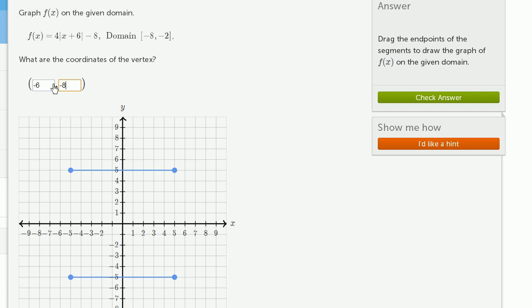So that's the vertex, and that's going to be the minimum point. This is going to be an upward opening absolute value function. So now let's just draw it. And what we could do is we could put some points at the vertex. So let's put some points at negative 6, negative 8. Negative 6, negative 8 is right over there.